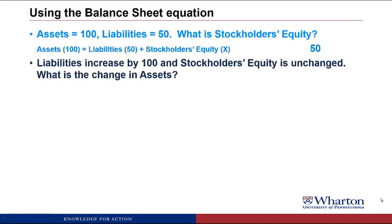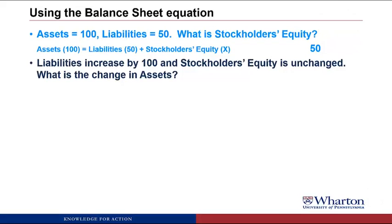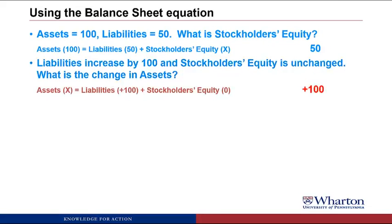Problem 2: Liabilities increase by 100 and stockholders' equity is unchanged. What is the change in assets? We use the balance sheet equation looking at changes in values. Stockholders' equity is not changing. Liabilities are going up by 100. The only way to stay in balance is for assets to also go up by 100, so that each side of the equation goes up by the same amount.